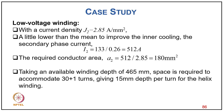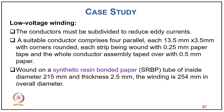For low voltage winding design with 465 mm winding depth and 30+1 turns, giving 15 mm depth per turn in the main helix winding: the conductor must be subdivided to reduce eddy currents. A suitable conductor comprises 4 parallel strips of 13.5×3.5 mm with rounded corners, each wound with 0.25 mm paper tap and the whole assembly tapped with 0.5 mm paper, wound on an SRB tube of 215 mm inner diameter and 2.5 mm thickness. Overall LV winding diameter is 254 mm.